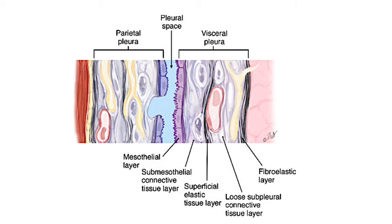On the external aspect, closest to the chest wall, we have the parietal pleura, and on the medial aspect adjacent to the lung parenchyma is the visceral pleura. From the pleural space you have the mesothelial layer, then the sub-mesothelial connective tissue layer, the superficial elastic tissue layer, then the loose sub-pleural connective tissue layer, and closest to the lung parenchyma is the fibroelastic layer.